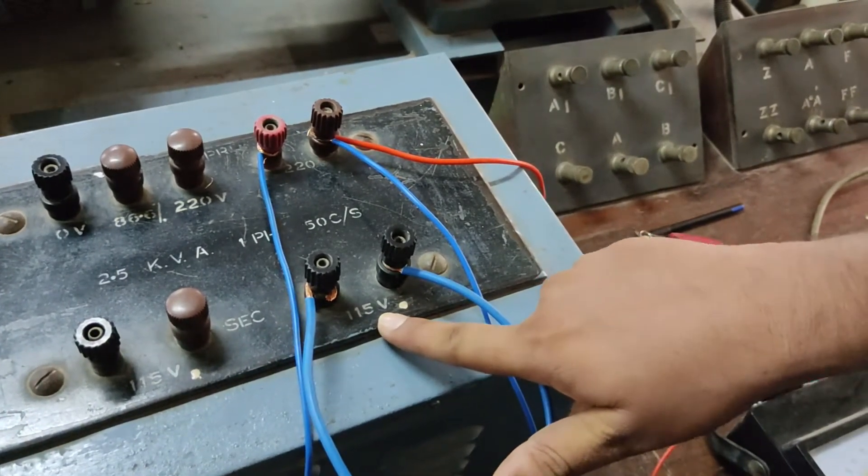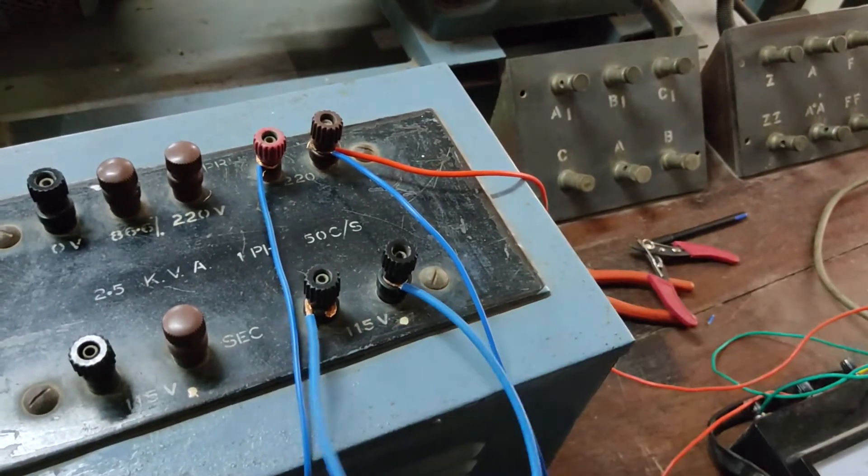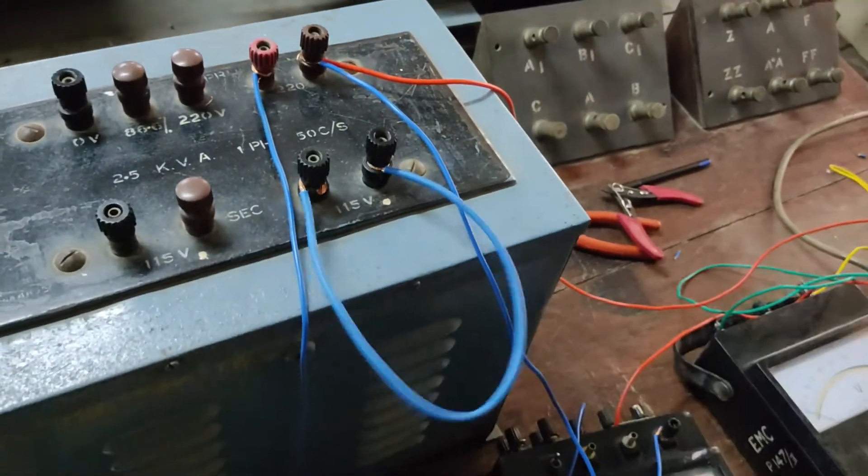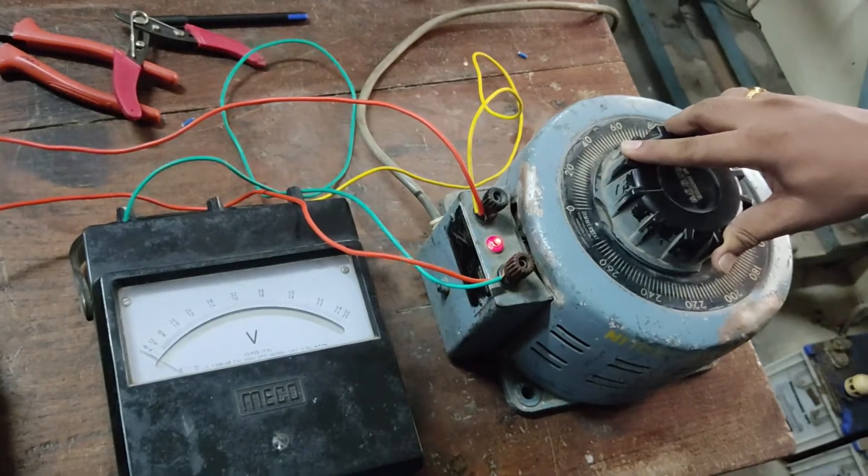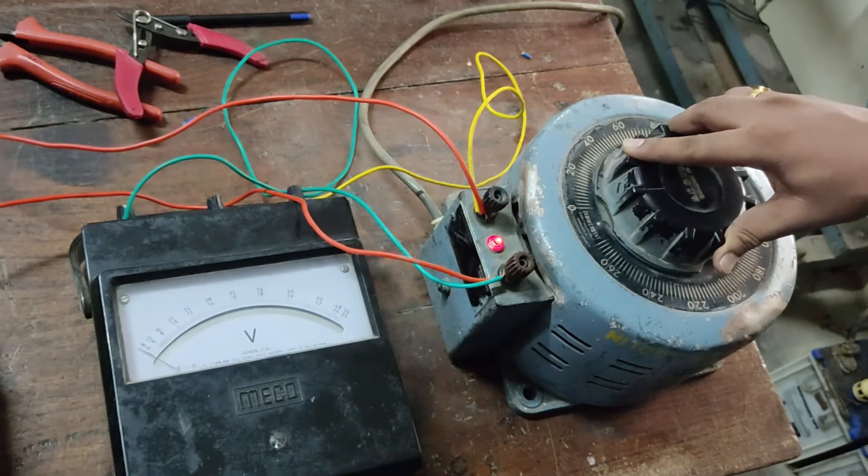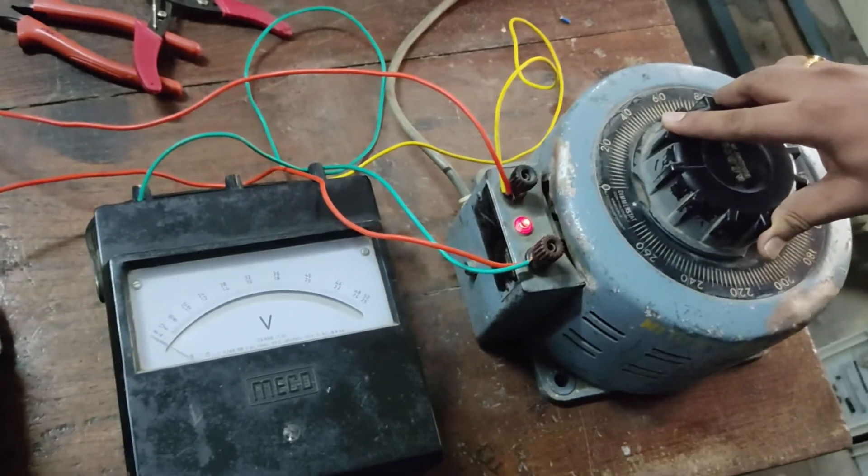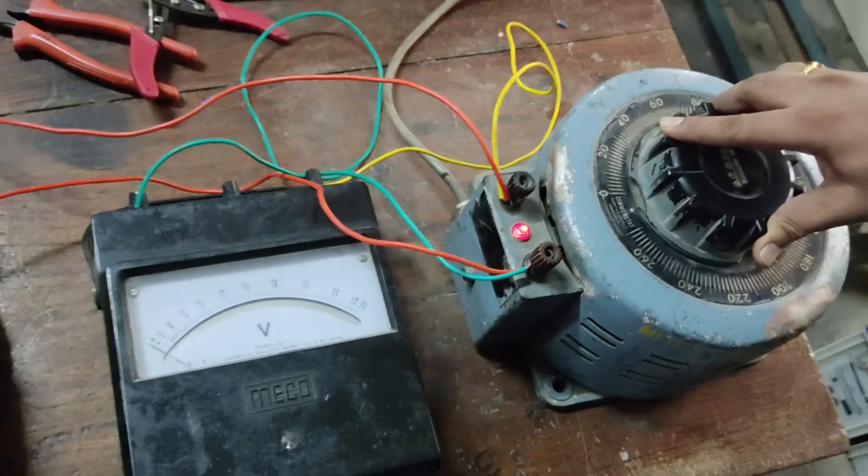The reduced voltage you have to apply to get full load current means only 8 to 12 percent of input voltage. You have to apply that and you'll get the deflection.